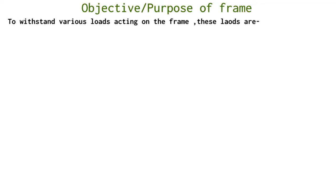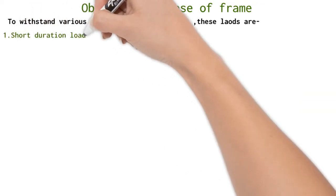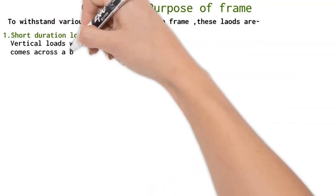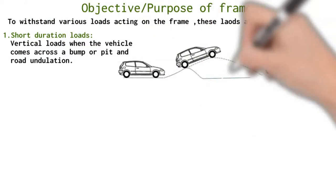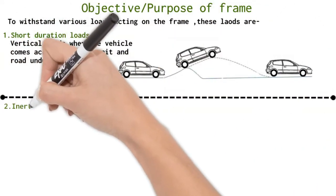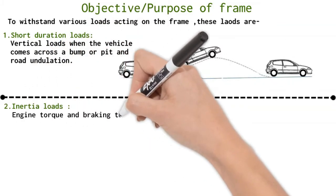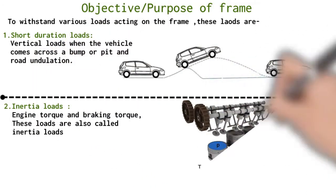Various loads acting on the frame are short duration loads: vertical loads when the vehicle comes across a bump or pit and road undulation. Inertia loads: engine torque and braking torque, these loads are also called inertia loads.